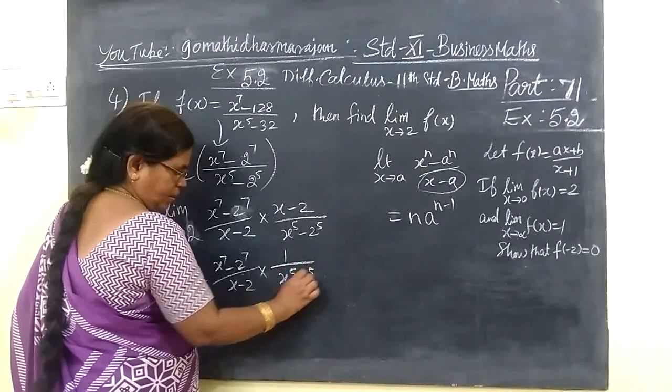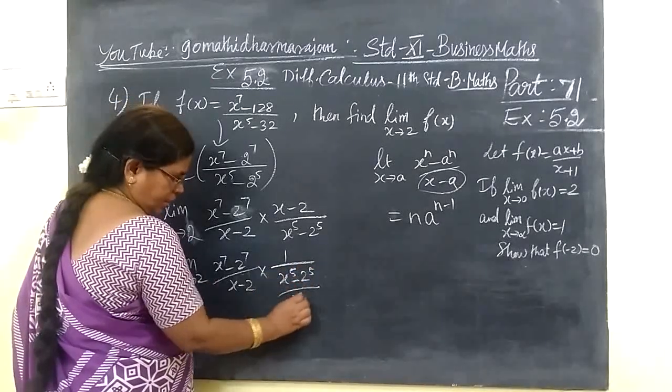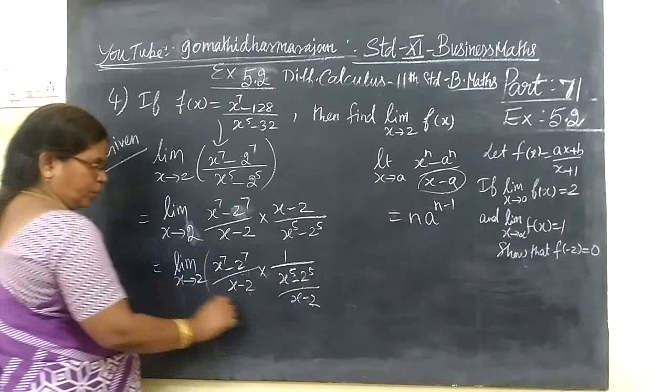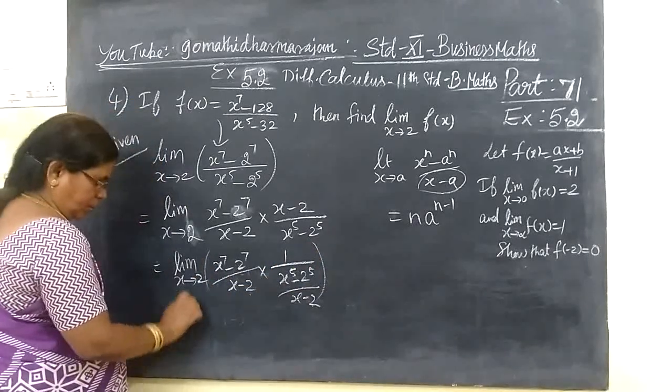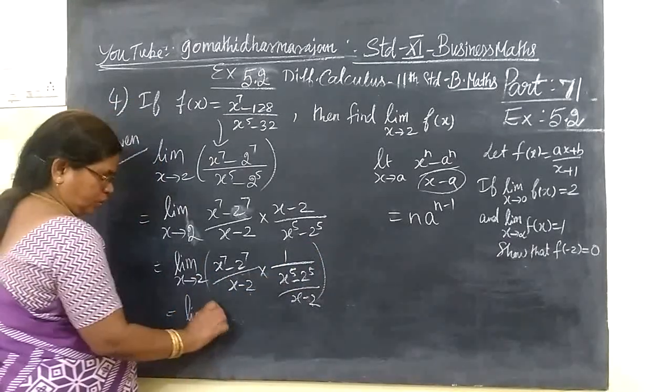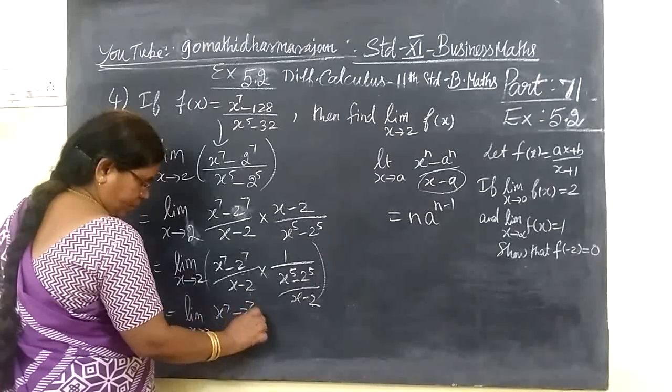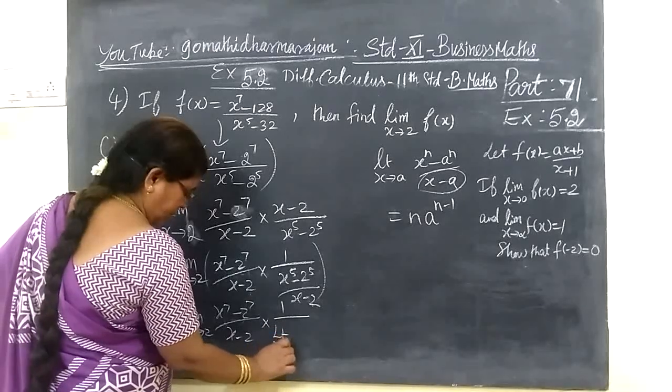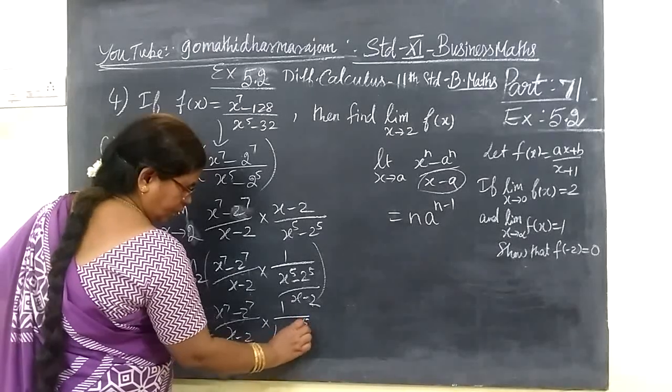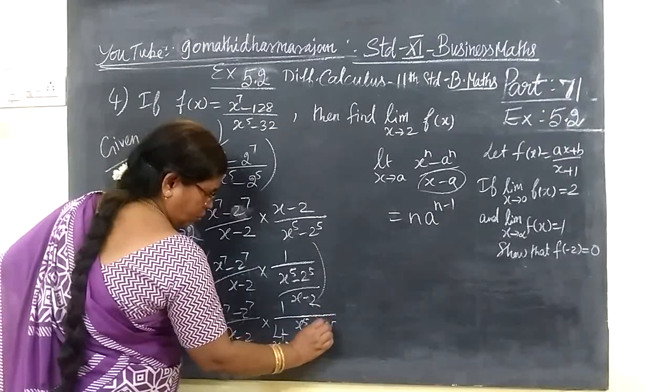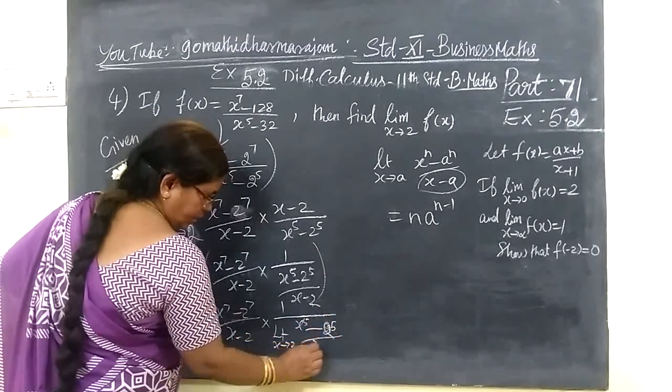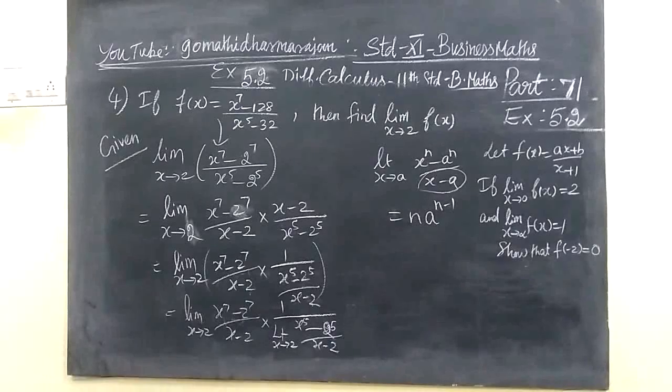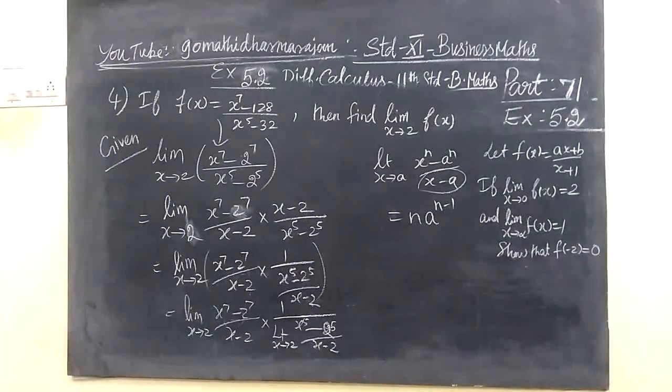So equal to limit x tends to 2, x power 7 minus 2 power 7 by x minus 2. Multiplied by 1 by limit x tends to 2, x power 5 minus 2 power 5 by x minus 2. This is the whole value.